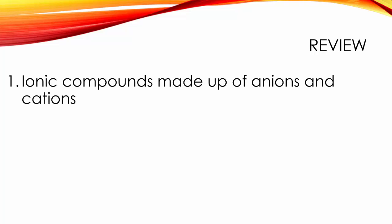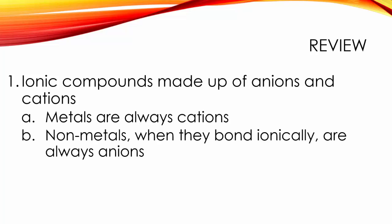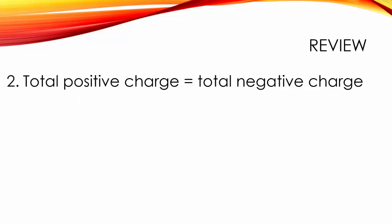To review ionic compounds and ionic bonding at the true basics: ionic compounds must be made up of anions and cations. The metals will always be cations. Non-metals when they bond ionically are always anions. The total positive charge within the formula unit must equal the total negative charge. It's not a true molecule, it's technically that formula unit.